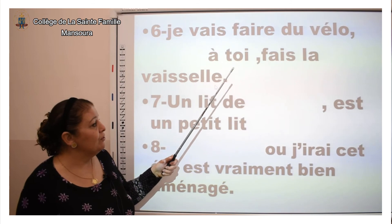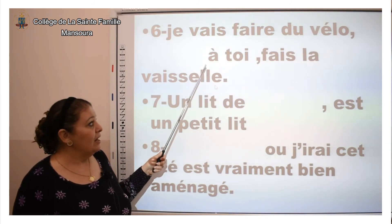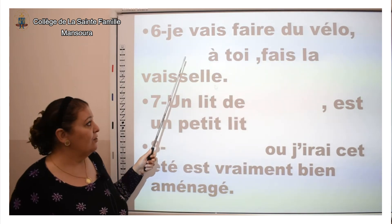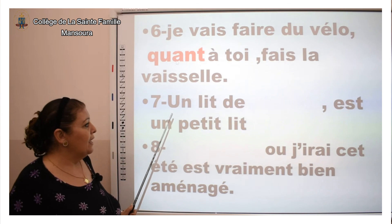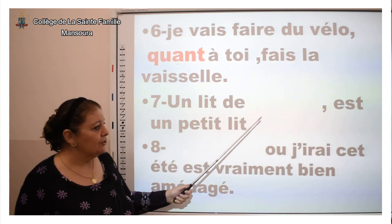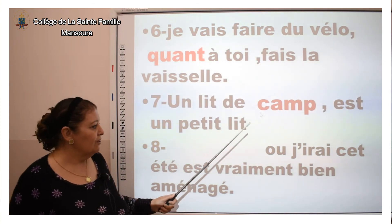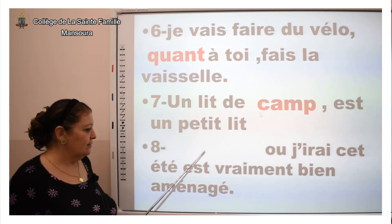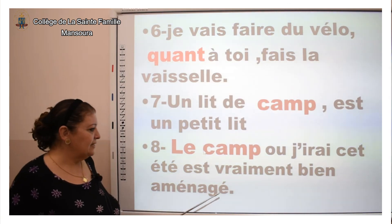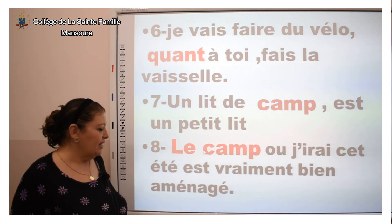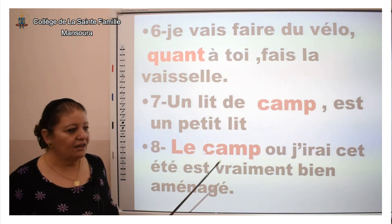Exemple six : « Je vais faire du vélo au camp. » Ici, « camp » est un lieu — le camp.